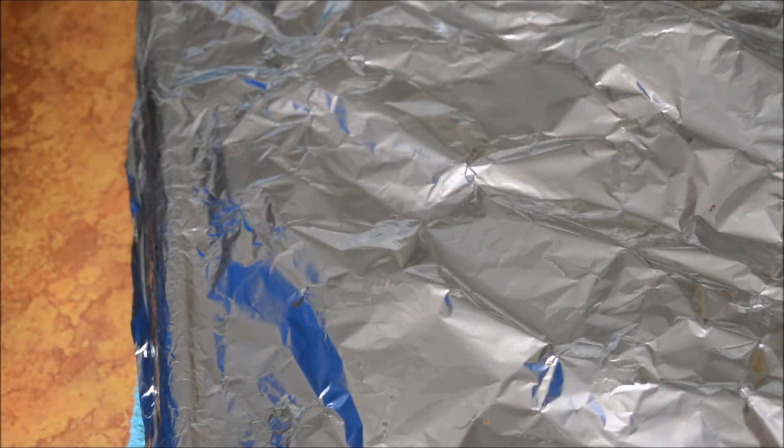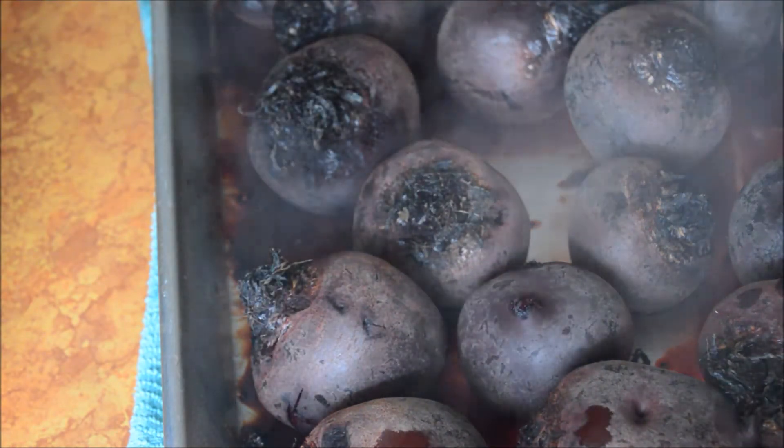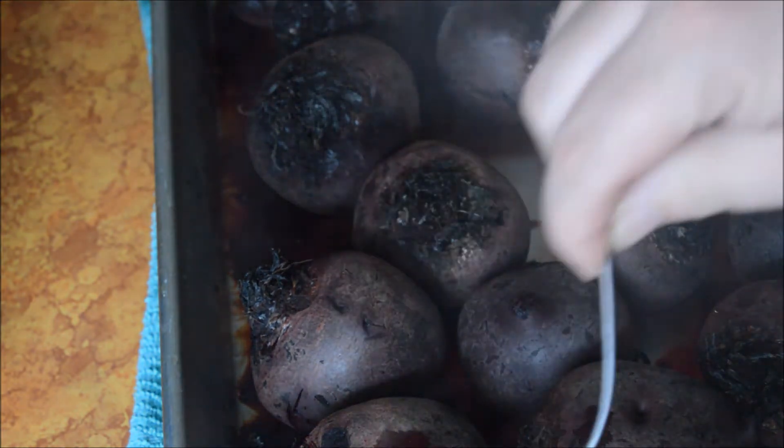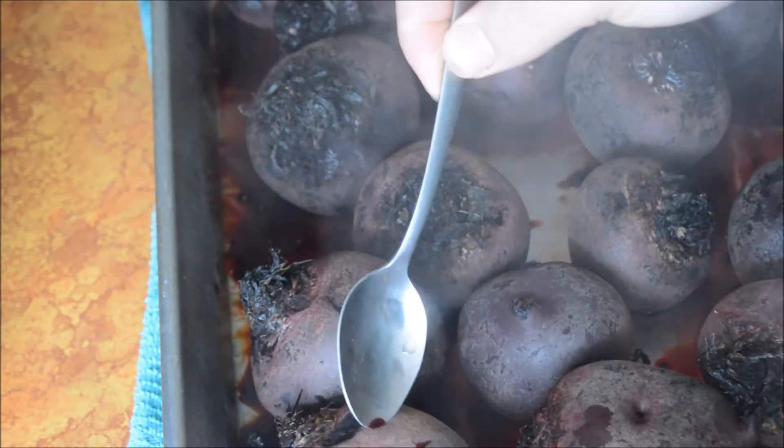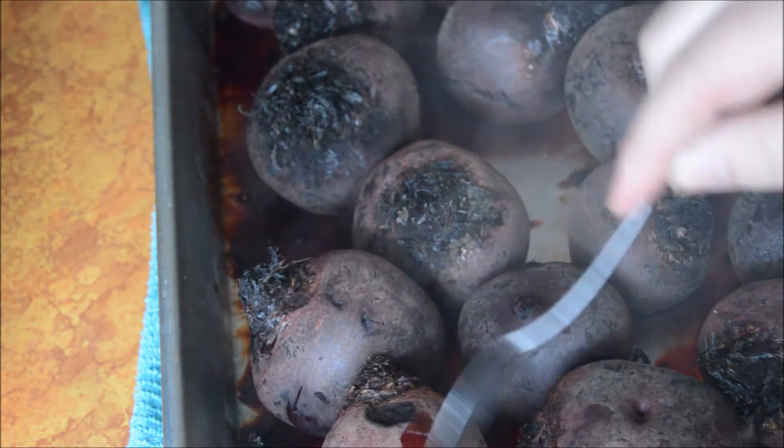Okay, so we have our beets out of the oven, and you can see they produce some of their own moisture. That other is just, they're really supposed to steam them, so we will see, you can kind of see how easy they peel.